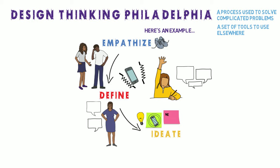They take their favorite ideas and try them out in the prototype stage. In this stage, the design team brings their ideas to life by making versions the users, or people who experience this problem, can actually interact with.